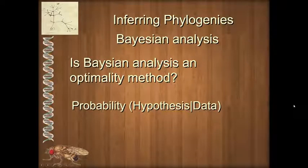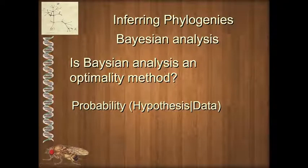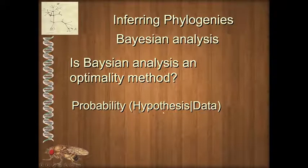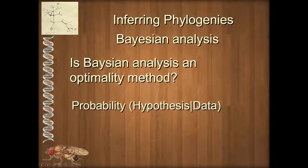Now we're going to make some distinctions between Bayesian analysis and maximum likelihood analysis. The first major difference is the way that we calculate the score or the probability of any hypothesis — and a hypothesis in this context is simply a phylogeny, while the data is that alignment of genetic characters with homology statements. When doing maximum likelihood, we calculated the probability of our data given a hypothesis.